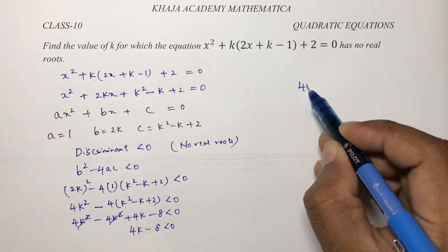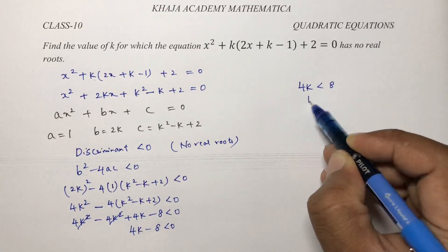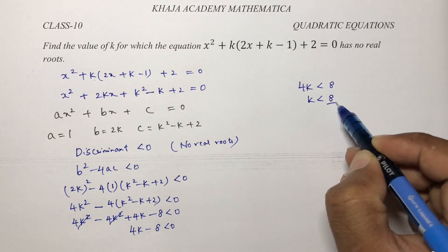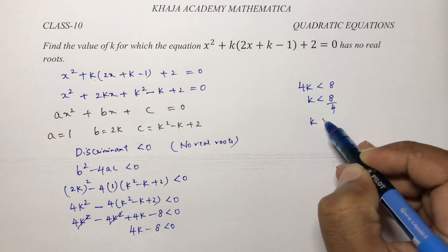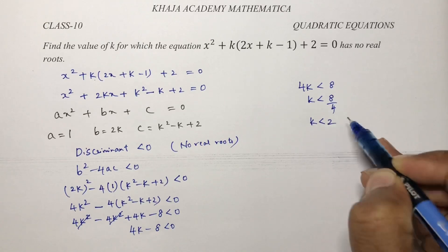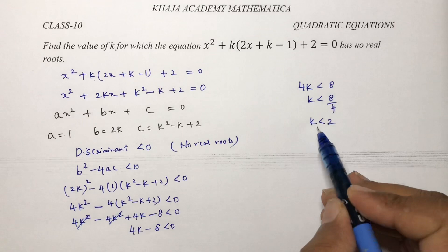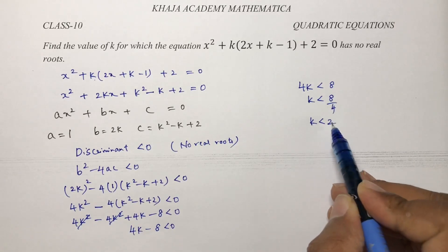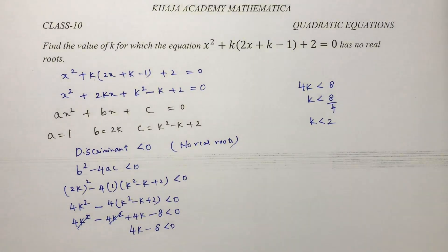So 4k is less than 8, which means k is less than 8 divided by 4, giving k is less than 2. So for all values of k less than 2, the equation has no real roots.